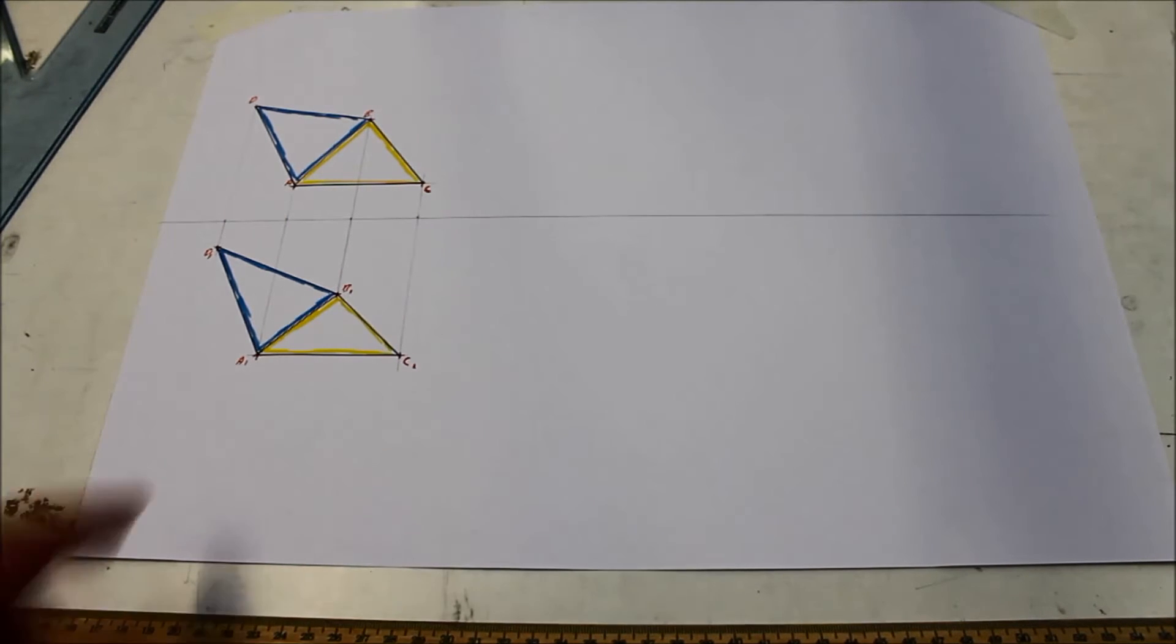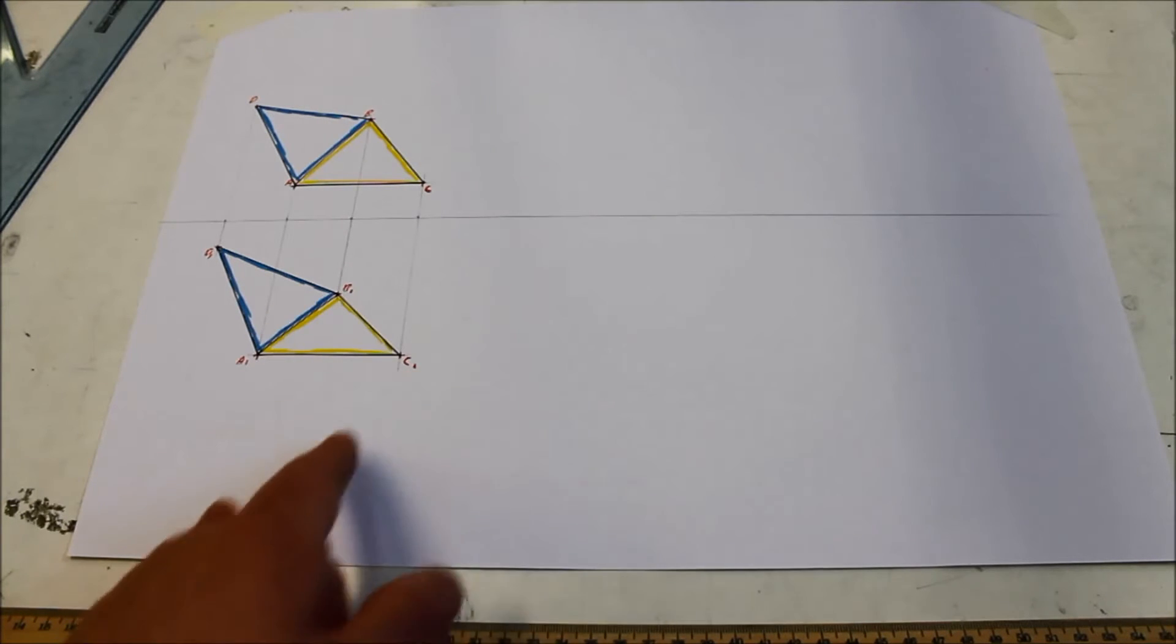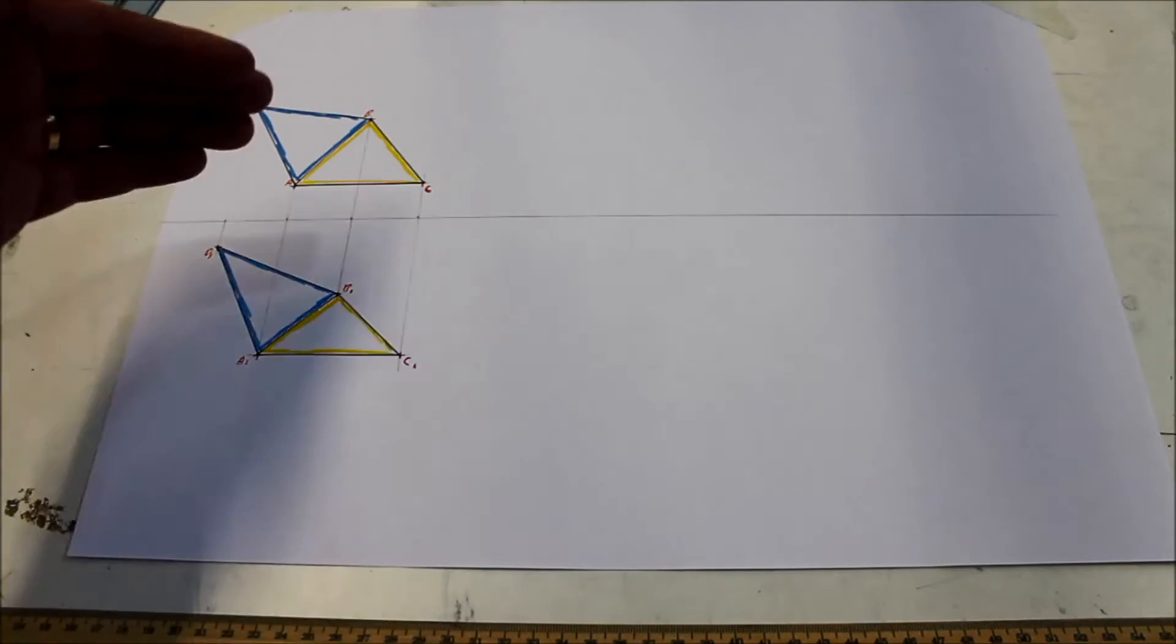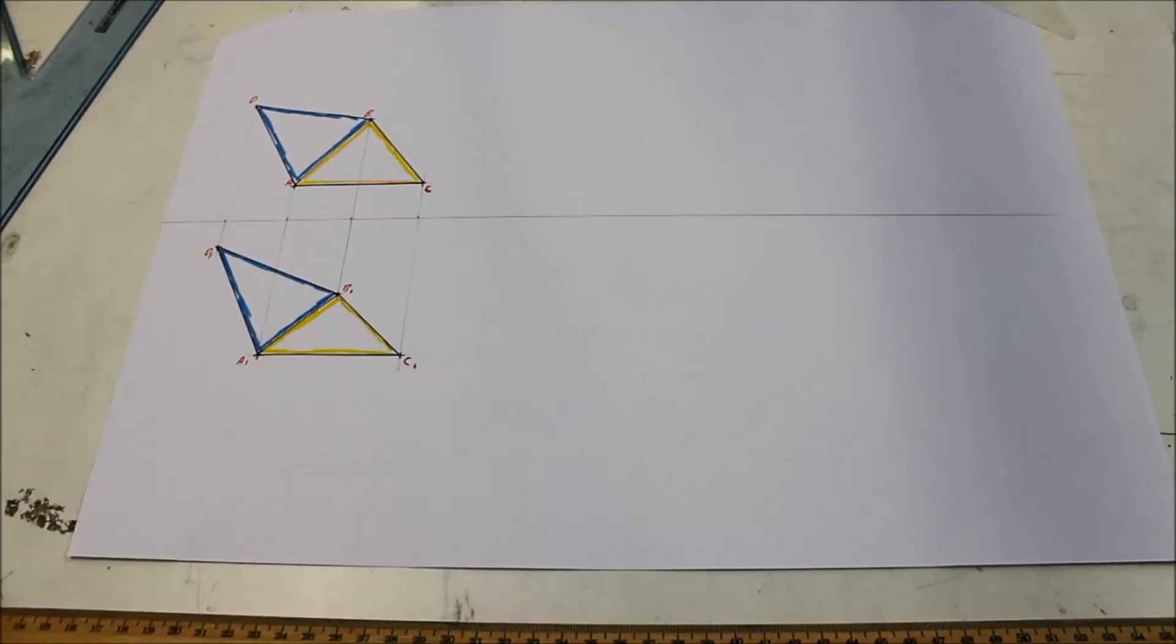So let's do our two auxiliary views. We go perpendicular to A1 B1 here, put in our X1 Y1, get our heights from the XY line up, and we can put a datum line at AC.